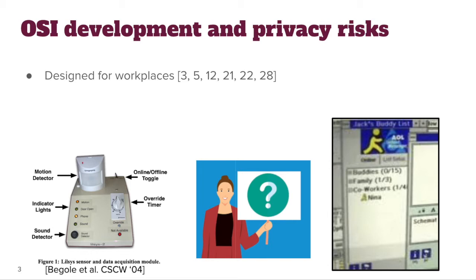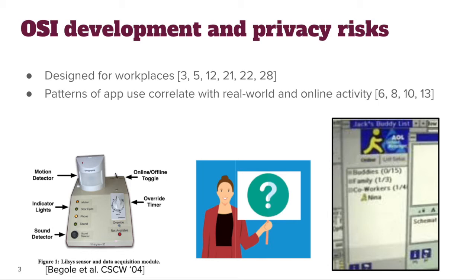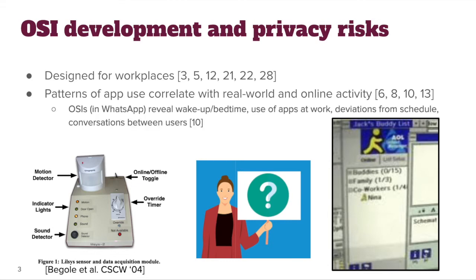Prior work has found that patterns of app use correlate with real world and online activity. Buchenstein et al. studied OSIs in WhatsApp and found that OSIs can reveal what time people wake up or go to bed. You can tell if people are using apps while they're at work, which might be against the rules. You can see when there are deviations from people's typical schedules, which might mean they're on vacation, and in some cases you can see when people are having synchronous conversations using the app.